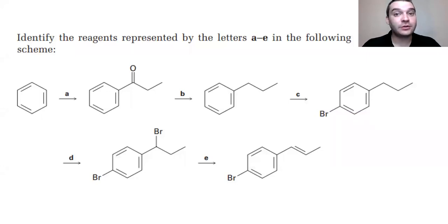Hello chemistry students, your tutor Jake here. Today we have an electrophilic aromatic substitution or EAS synthesis practice problem. It says identify the reagents represented by the letters A through E in the following scheme. When we're looking at the first one here, this is going to be one of those named reactions. This is a Friedel-Crafts acylation.